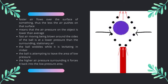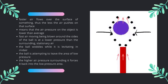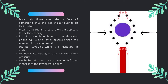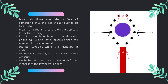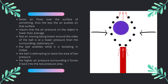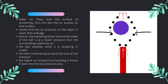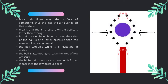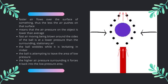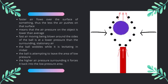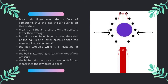The fast air moving that's being blown around the sides of the ball, as shown in the diagram, is at a lower pressure than the surrounding stationary air. The ball, upon closer glance, is seen to be wobbling while it is levitating in mid-air. This is because the ball is attempting to leave the area of low pressure. However, the higher air pressure surrounding it forces it back into the low pressure area.